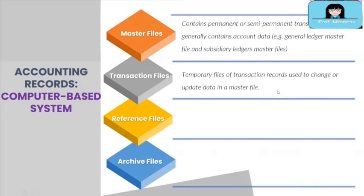Transaction files are temporary files of transaction records used to change or update data in the master file. For example, a check payment for a vendor is created or encoded in the computer system but is not yet posted — the check is on the payment transaction file pending for posting. Once the payment transaction file is posted, it will update the master file.